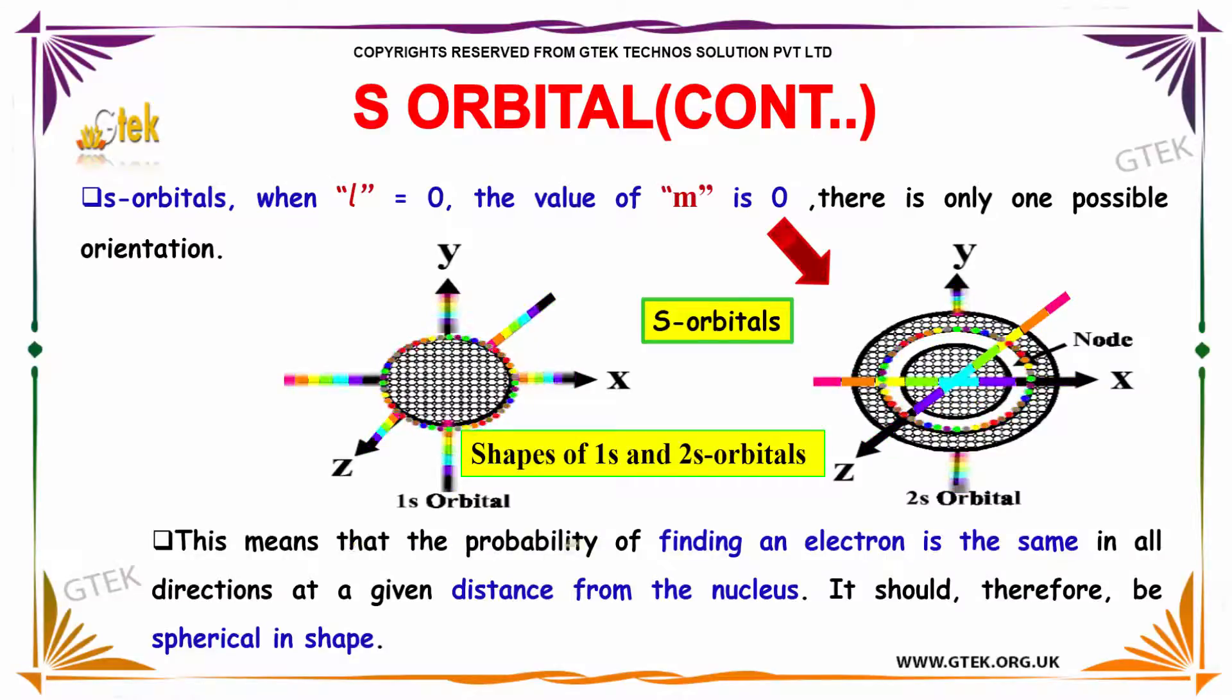This means that the probability of finding an electron is the same in all directions at a given distance from the nucleus. It should, therefore, be spherical in shape.